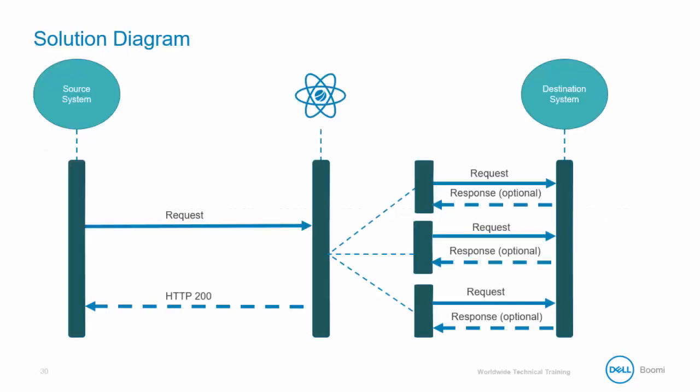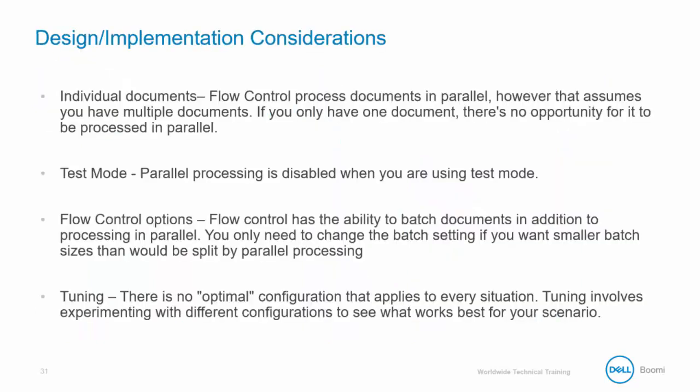This illustration is a solution diagram. The request is made to the source system and data is returned into the Boomi process. The process reaches a flow control shape and processes in parallel. The threads or forked JVMs then complete the process and send the data to the destination system in parallel.